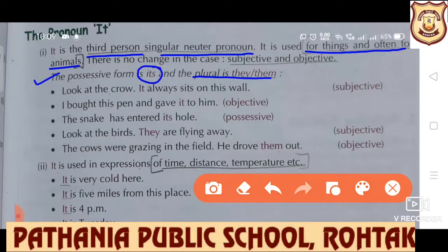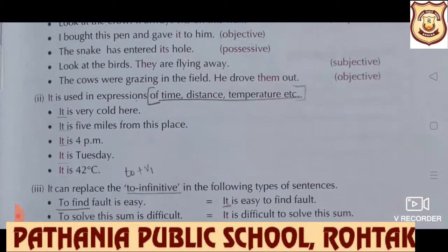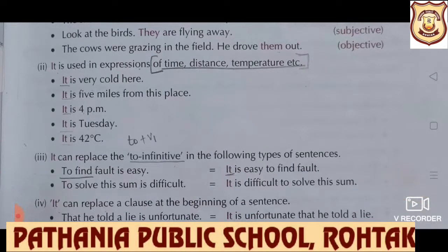The possessive form of 'it' is 'its', and the plural is 'they' and 'them'. But there is no change in the form when subjective and objective cases are concerned. 'Look at the crow — it always...' 'I bought this pen and gave it' — here 'it' refers to the pen. 'It' refers to the crow. 'The snake has entered its hole' — now possessive case is there, so 'its' is used. Also remember that 'it' is used in expressions of time, distance, and temperature. 'It is very hot. It is 5 kilometers away from this place. It is 3 p.m. It is Monday. It is 35 degrees Celsius', etc.